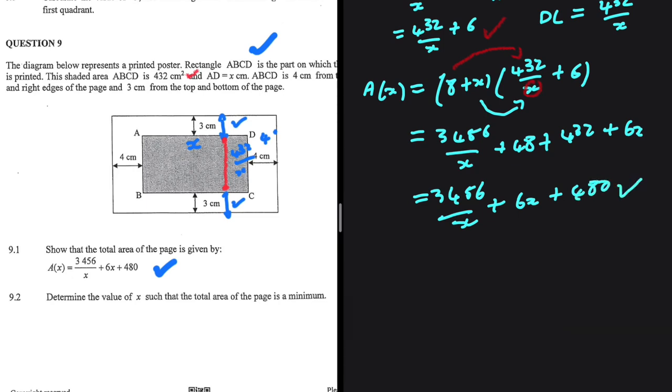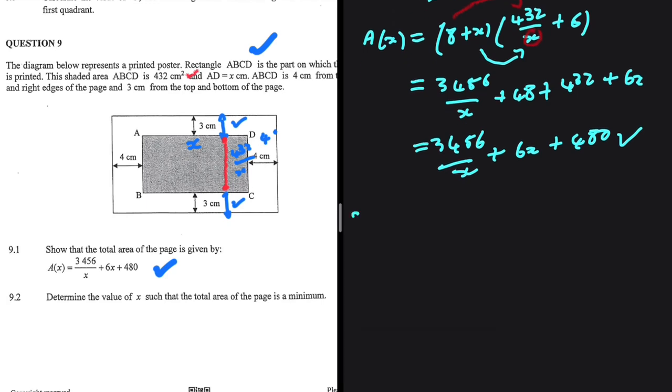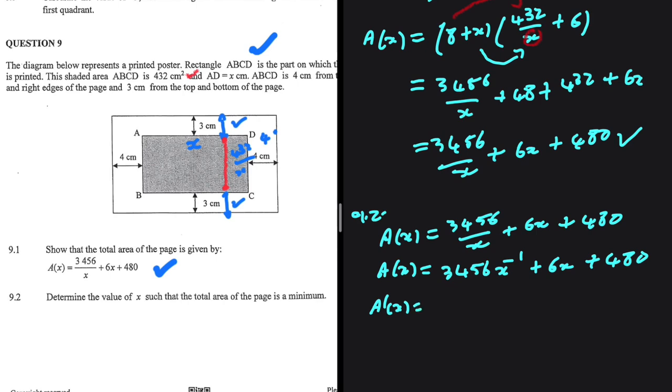Let's go ahead and move to 9.2. In 9.2 we're supposed to determine the value of x for which the total area will be a minimum. You know fully well this is almost always the case, we're gonna derivate the equation in 9.1 and equate to 0. Let's do that first and we're gonna talk about why we're doing that. So a of x is equals to 3456 divided by x plus 6x plus 480. But we can rewrite this right, a of x will be equals to 3456 x to the minus 1, that is the same as divided by x, plus 6x plus 480. Let's go ahead and derivate this using the power rule. We're gonna have a prime of x being equals to minus 3456 multiply by x to the minus 2 plus 6.